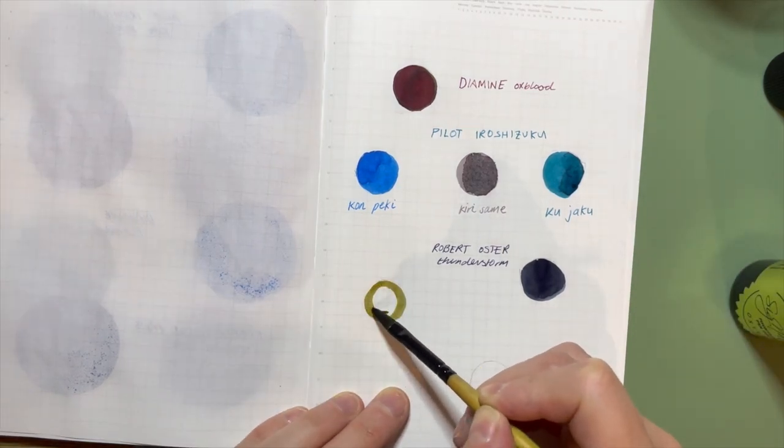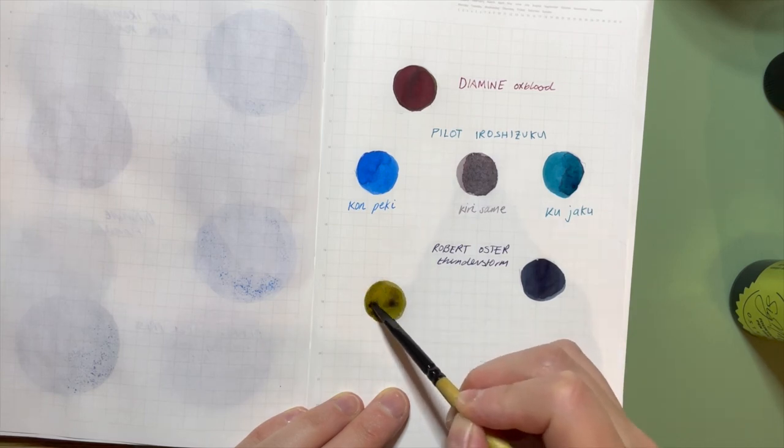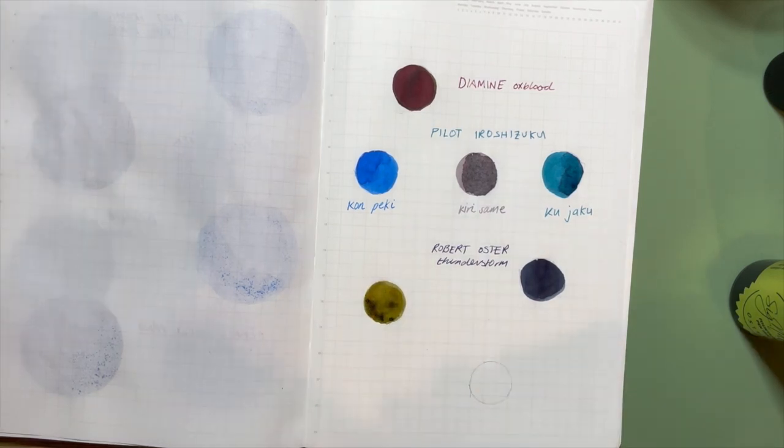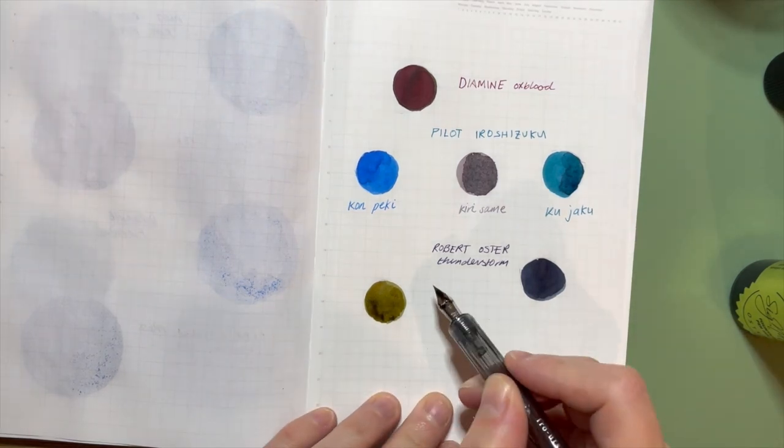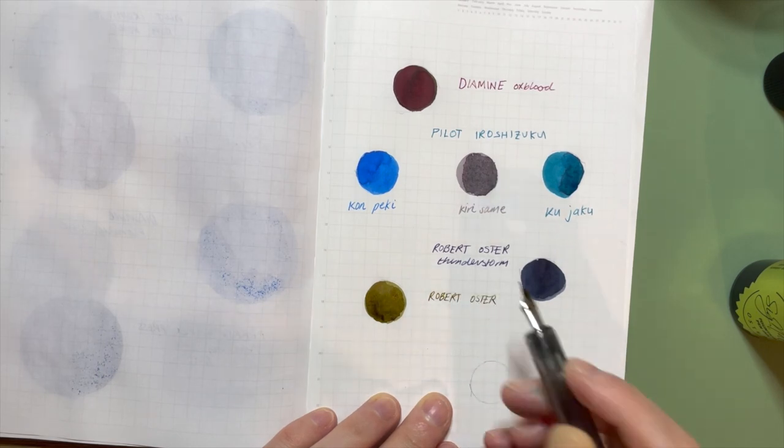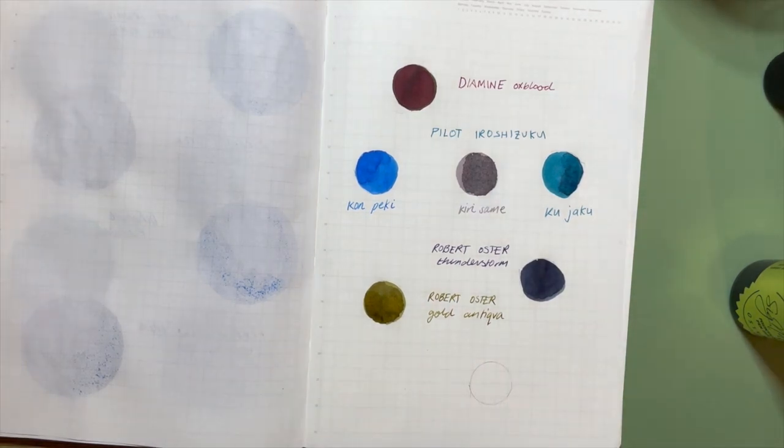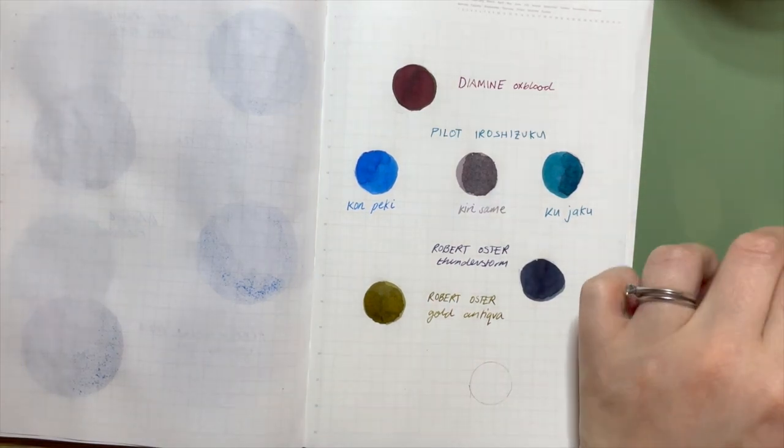Next up is another Robert Oster ink, and it's Robert Oster Gold Antiqua. And I've included this because this, for me, was my first what I'm going to call complex ink, and what I mean by that is what actual color it is isn't clear. Is it brown, green, yellow, gold? Different pens, different paper, different lights - it looks different.